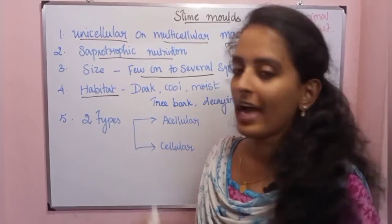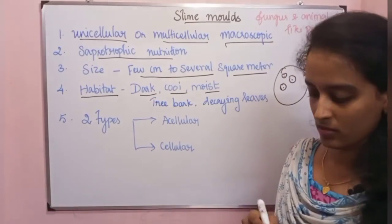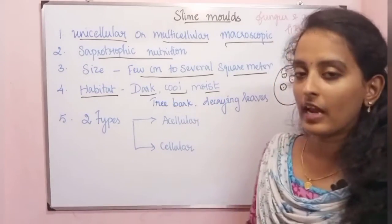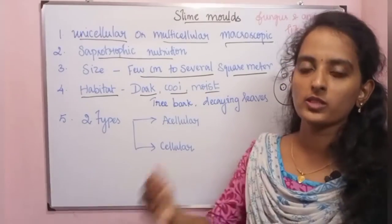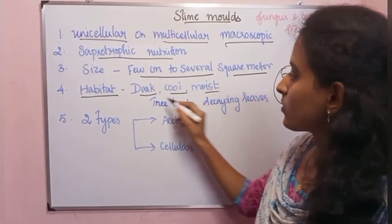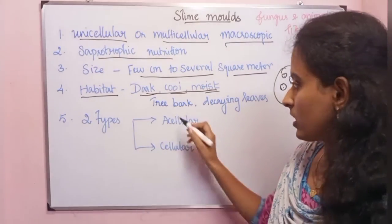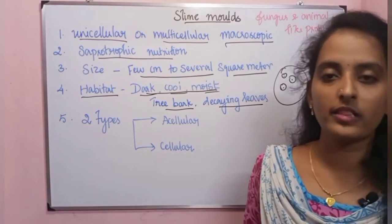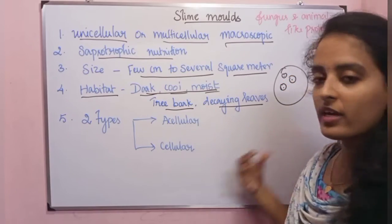The habitat of slime molds is dark, cold, and moist environments. They thrive during rainy days, which are favorable conditions. Summer days — hot and dry — are unfavorable. They are found on tree bark and decaying leaves, where they feed via saprotrophic nutrition.